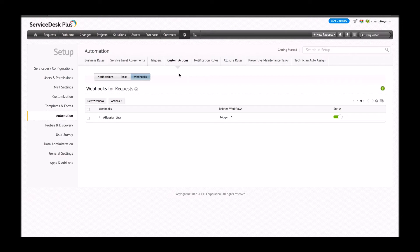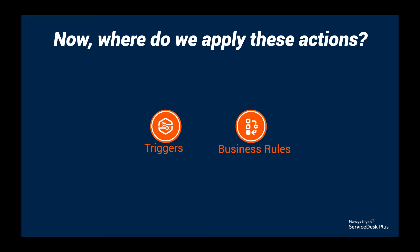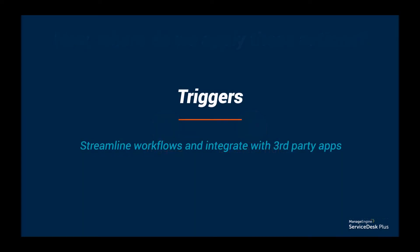Those were the custom actions we have created. These custom actions can be applied as part of triggers and also as part of business rules. The next feature I'd like to talk about is triggers. Triggers are preset automated workflows which come into play when a predefined condition is met on a ticket. The custom actions we created earlier can be used as triggers as part of a workflow.